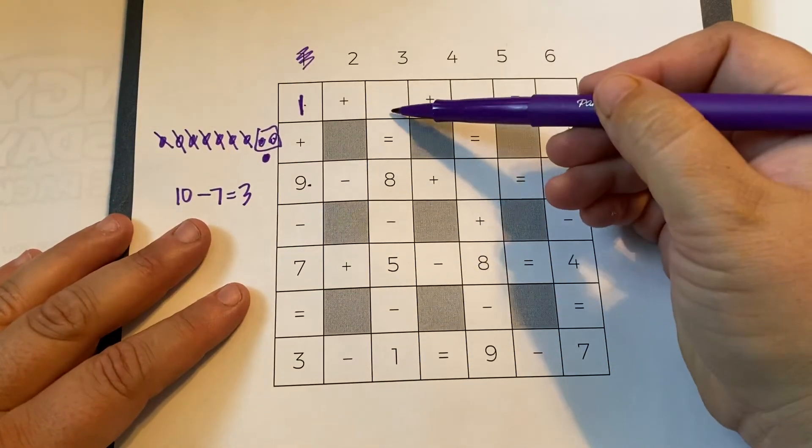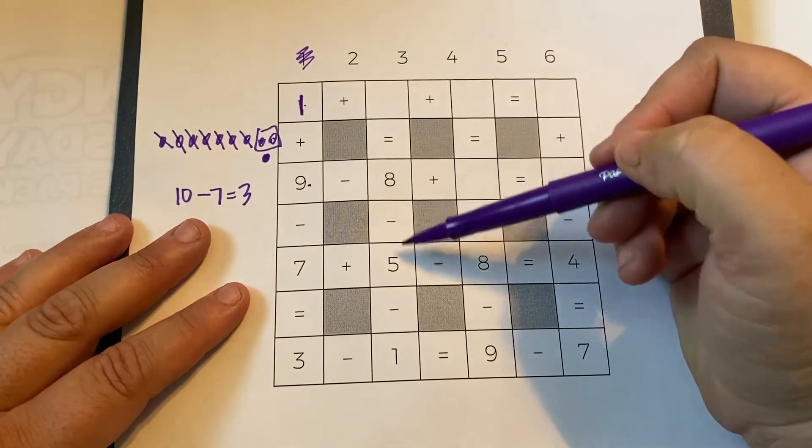So now I could do this one. Something is equal to eight minus five minus one.